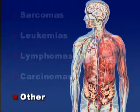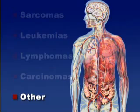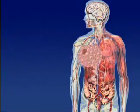There are a few cancers that don't fit into these major categories. Melanomas, for example, are not considered carcinomas, even though they arise from skin cells. And certain types of brain tumors have their own classification.